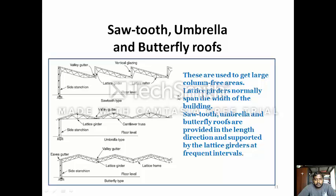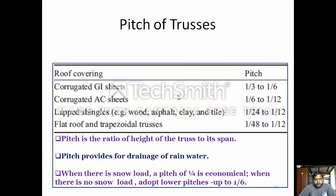These are used to get large column-free areas. Lattice girders normally span the full width of the building. Saw tooth, umbrella, and butterfly roofs are provided in the length direction and supported by the lattice girder at frequent intervals.